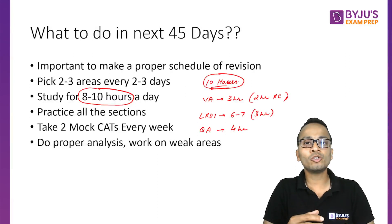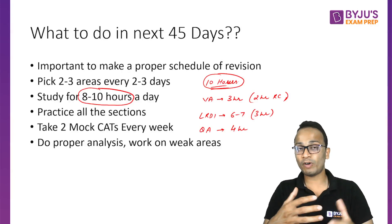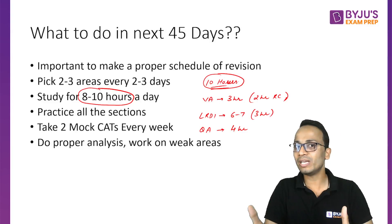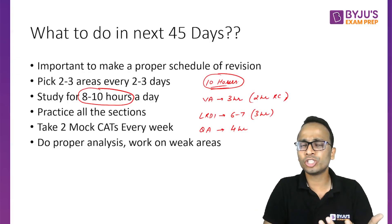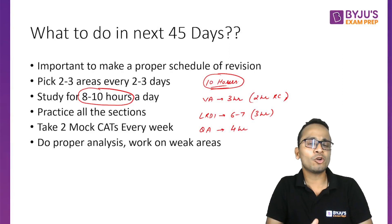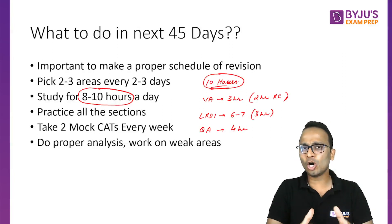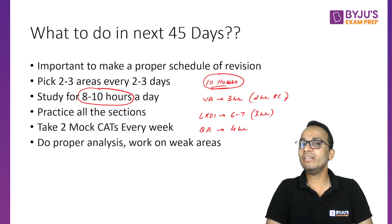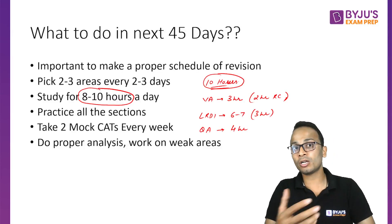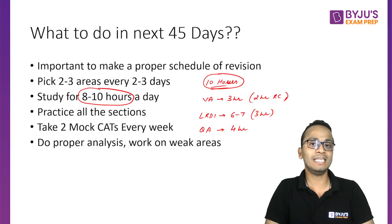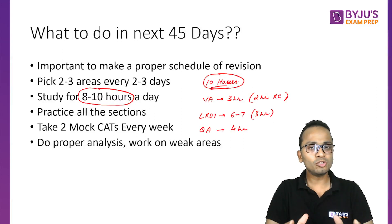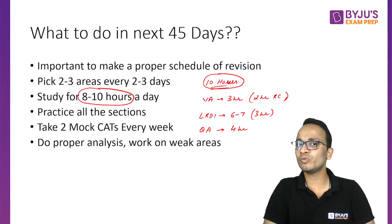After reviewing incorrect attempts, look at all the questions you left unattempted. Find out why you left them — were you unable to reach them, or did you think the question was lengthy and planned to return to it? Determine the level of difficulty of that question and whether it was wise to leave it during the exam or whether it should have been attempted. Then look at the solutions for all unattempted questions as well.